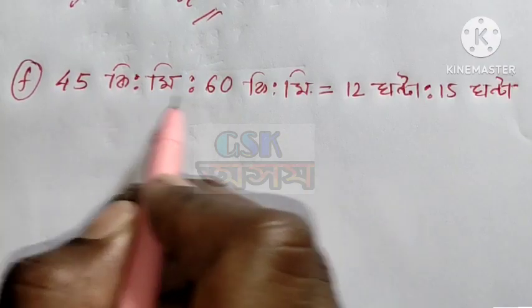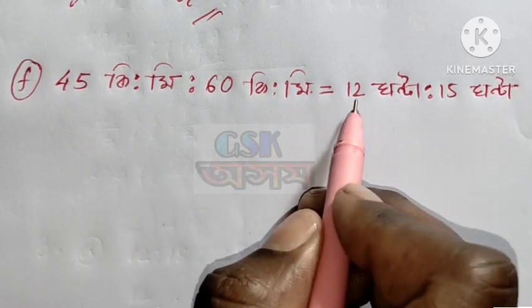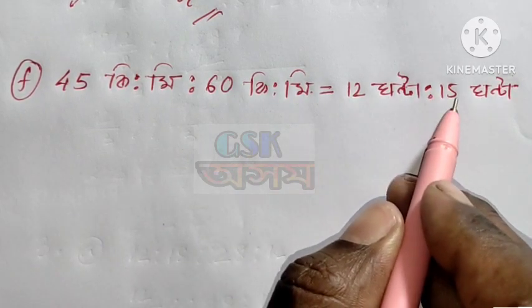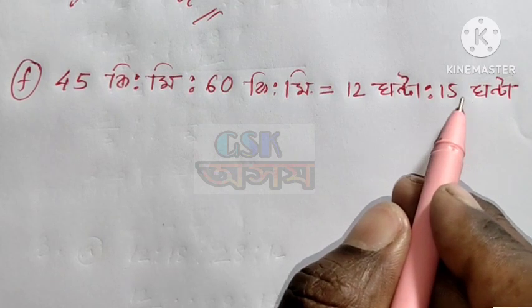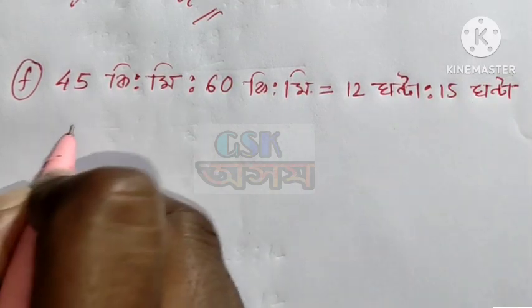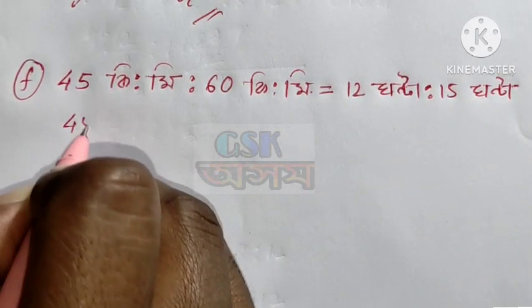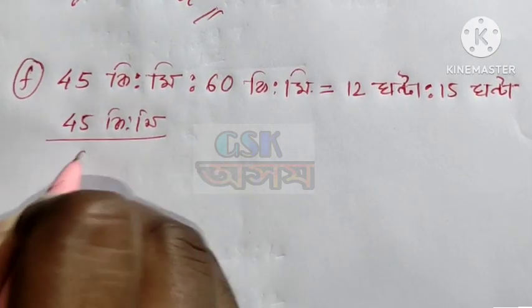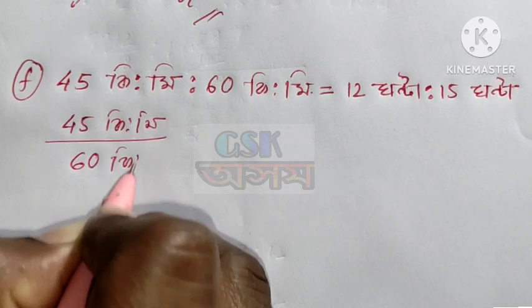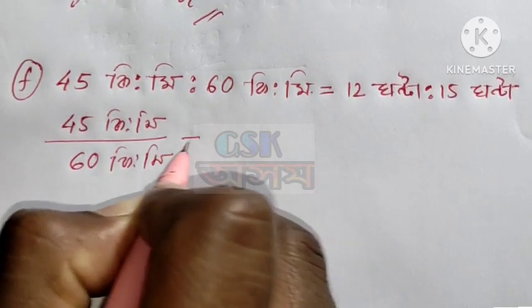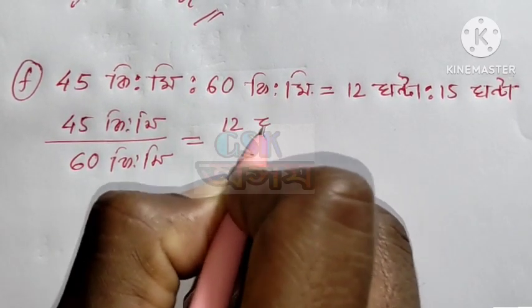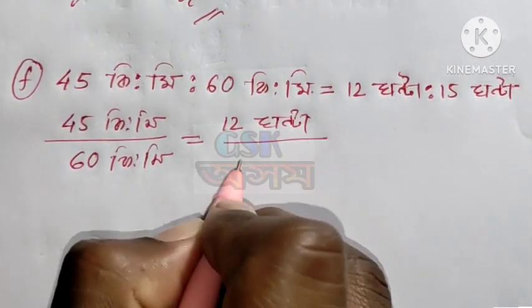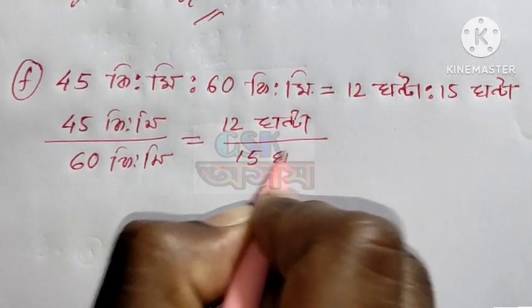45 km is to 60 km. 12 grams is to 15 grams. I will have the ratio. 45 km divided by 60 km. 12 grams divided by 15 grams.